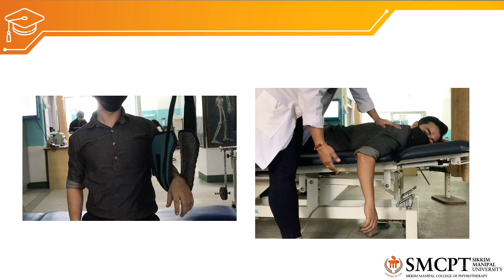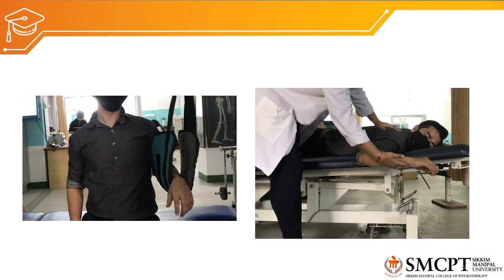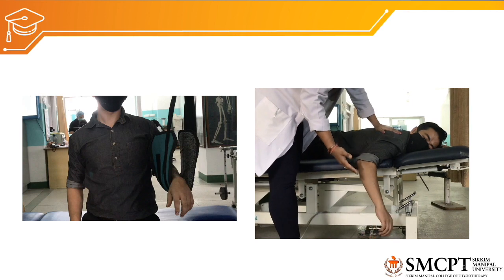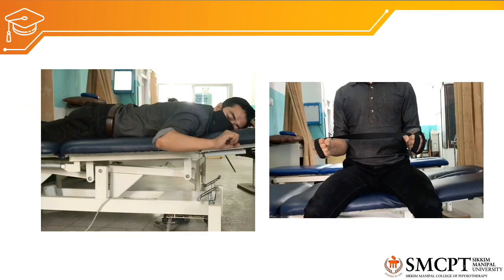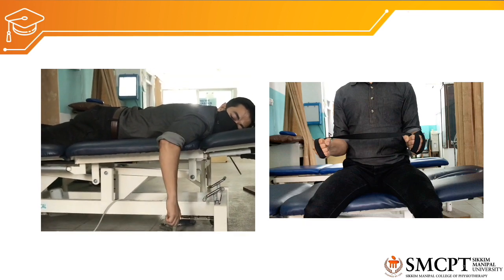If strength increases to grade 2 plus, the patient is positioned in prone lying with the shoulder abducted to about 90 degrees, supported underneath by a towel roll. The elbow is flexed to 90 degrees. If the patient cannot perform full range against gravity — grade 2 plus — the patient initiates movement and the therapist assists to full range. If the patient can complete full range against gravity, active range of motion exercises are performed for 10 repetitions to strengthen infraspinatus.